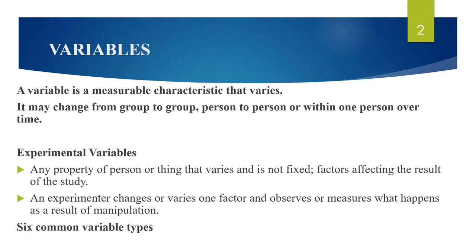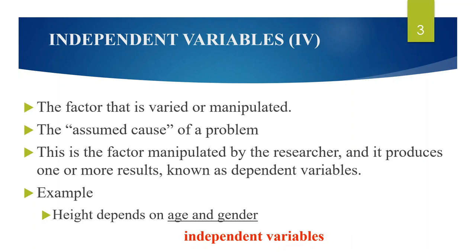In all, there are six variable types: independent variables, dependent variables, intervening variables, moderator variables, control variables, and extraneous variables.